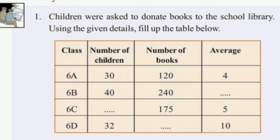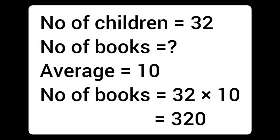The number of books equals number of children multiplied by average. We get 32 into 10, and we get 320 books.